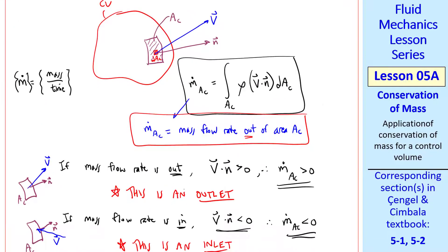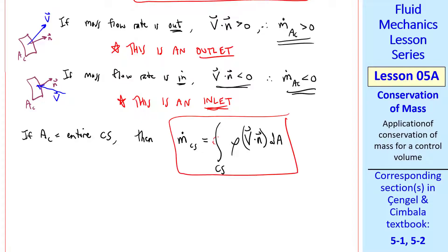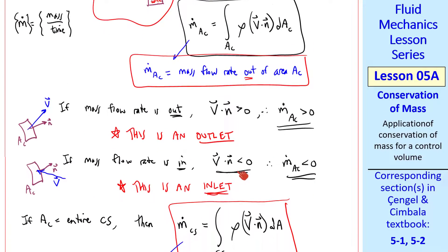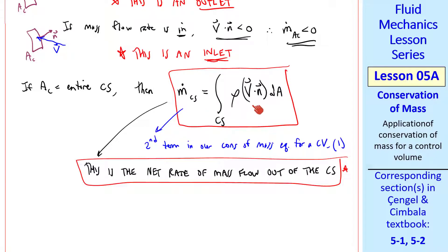Now let's let ac be the entire control surface. Then m dot across the control surface is integral over the control surface rho v dot n dA. This is the second term in our conservation of mass equation for a control volume, which was equation 1. It's this term that we had circled in green. So following the logic of our element ac of area, this is the net rate of mass flow out of the control surface. Again, the signs will take care of themselves because of the nature of the dot product. So the portions where this integral is positive will be outlets, and the portion where it is negative will be inlets.